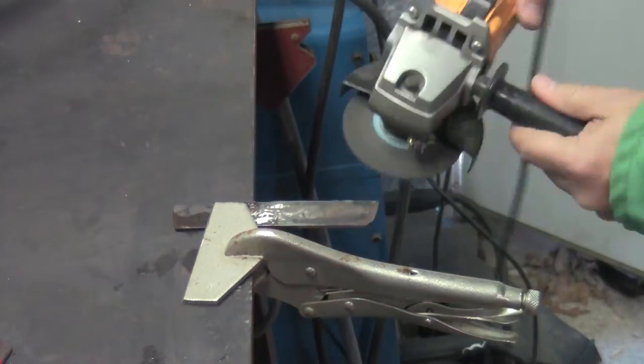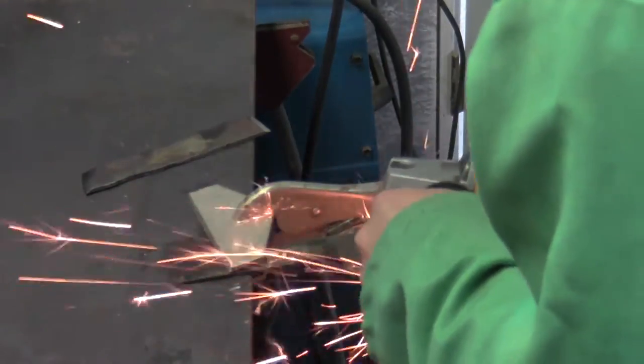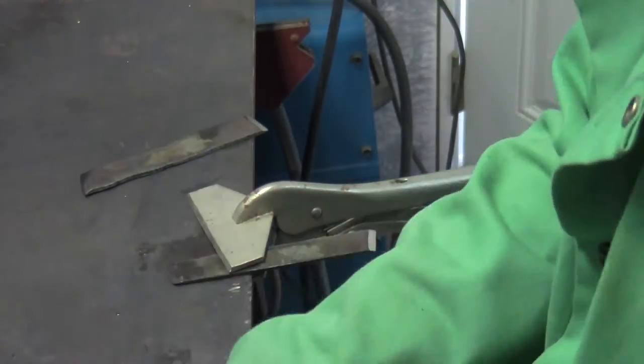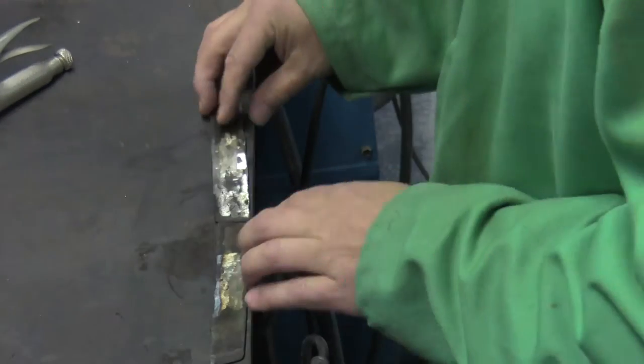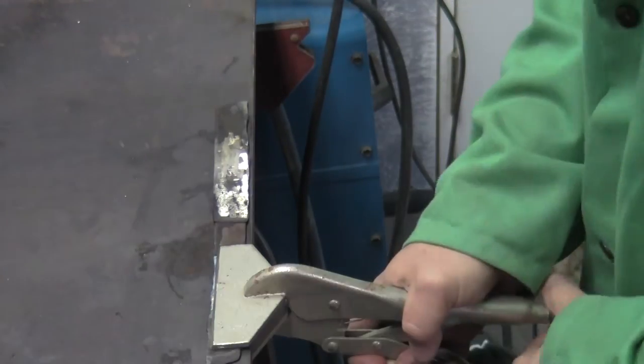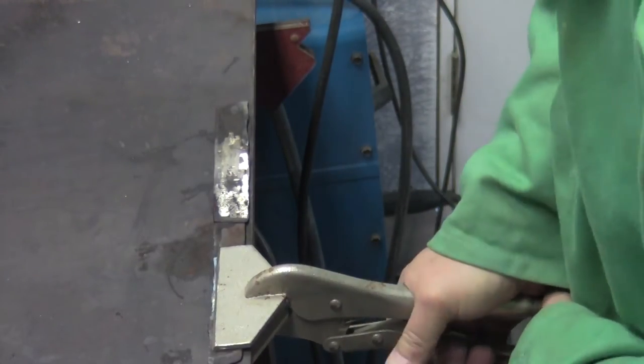Then I'm going to bevel the ends on both pieces, so that when I lay them together, they'll match up. I'll just clamp the two pieces flat on the welding table and weld them directly there.